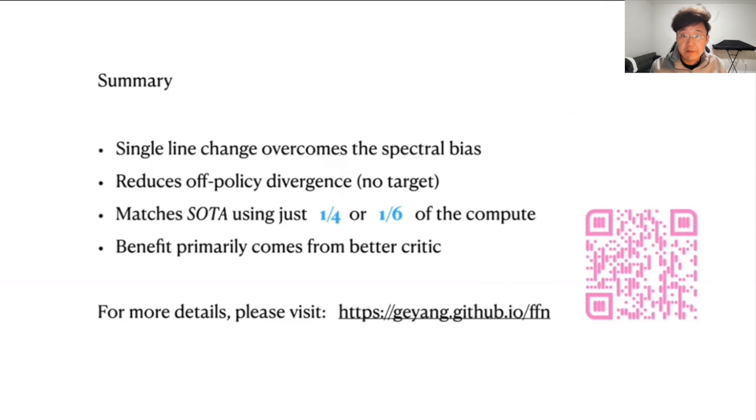In summary, in this work, we investigate the spectral bias of neural value approximation and show that a single line change via the Fourier feature network allows us to overcome the spectral bias by reducing the uncontrolled generalizations that are not local between input states and actions that are far away from each other.